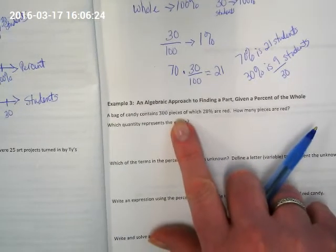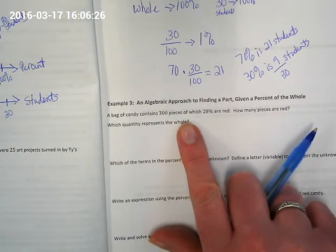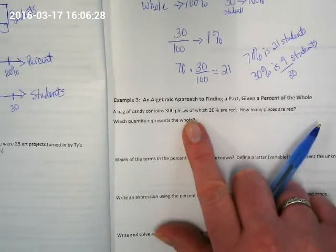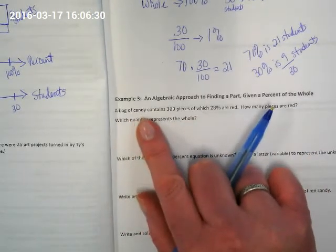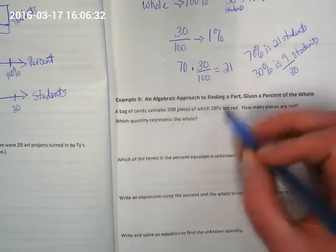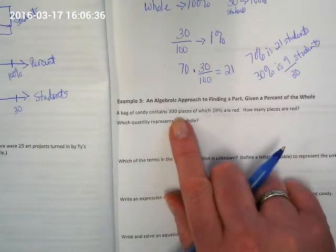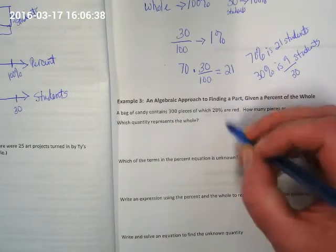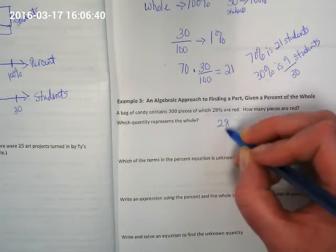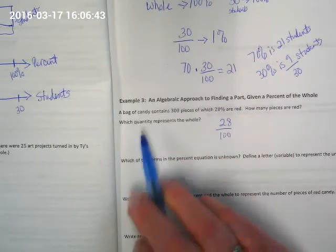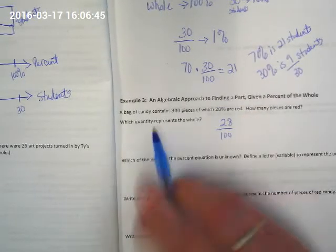Down here we're being asked in example 3 to show an algebraic approach. Well, you guys know the algebraic approach. That's what we do with proportions. A bag of candy contains 300 pieces of which 28% are red. What is the total? 300 pieces. What is the percent? 28 over 100.